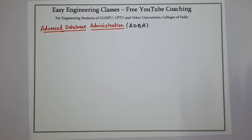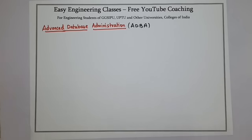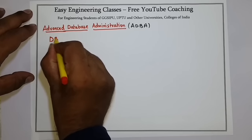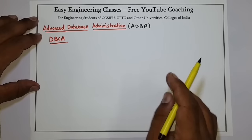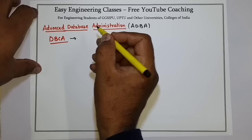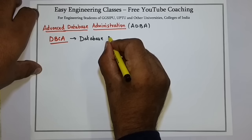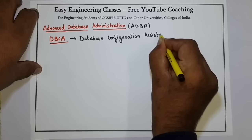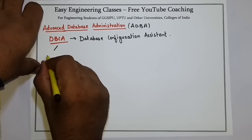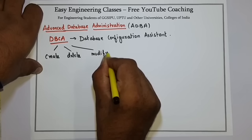Database administration is related to managing or configuration of the database in the system. The first topic is creating, deleting, or configuring a database with DBCA. DBCA is Database Configuration Assistant — it is used to manage databases in a system. Using DBCA you can create a database, delete a database, and also modify or configure your database.